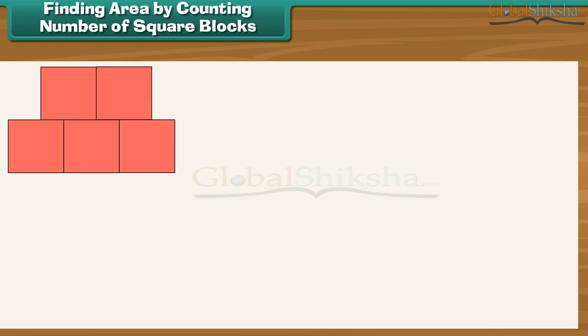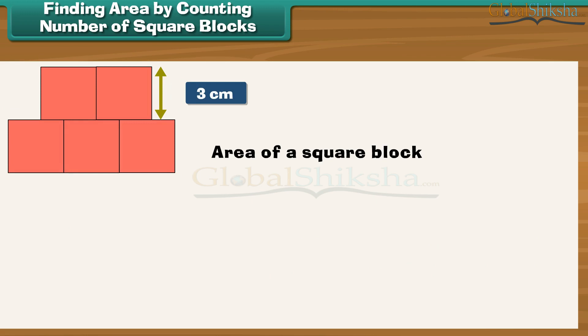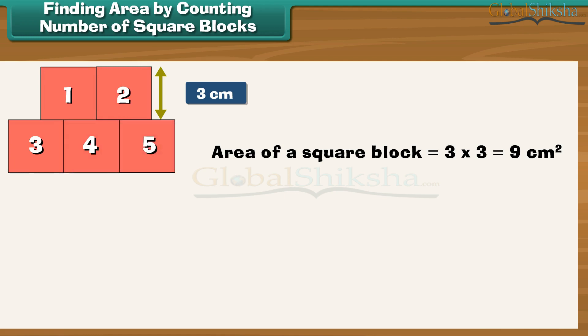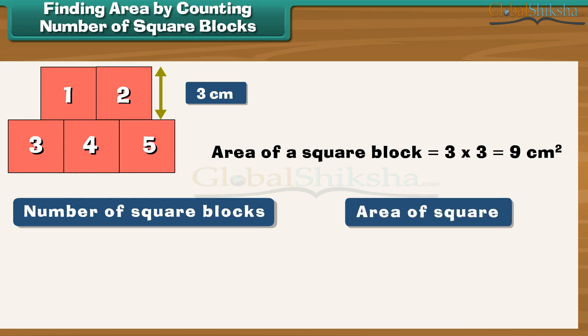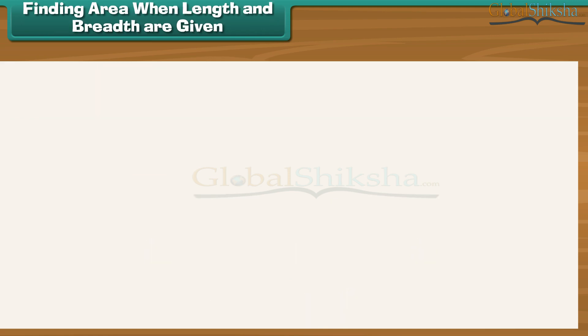Now let us calculate the area of a figure made up of square blocks, each of length three centimeters. The area of each square block is three into three, which equals nine centimeters square. Count the square blocks — there are five. So the area of the figure is the number of square blocks multiplied by the area of one square block, which is five into nine, equal to 45 centimeter square.